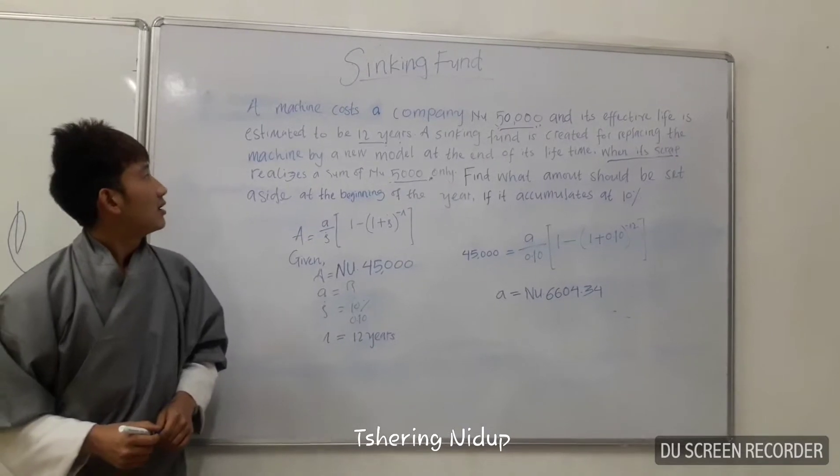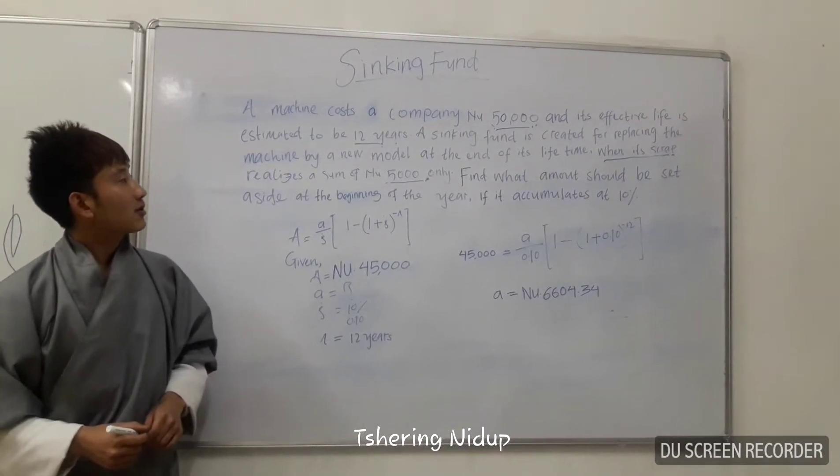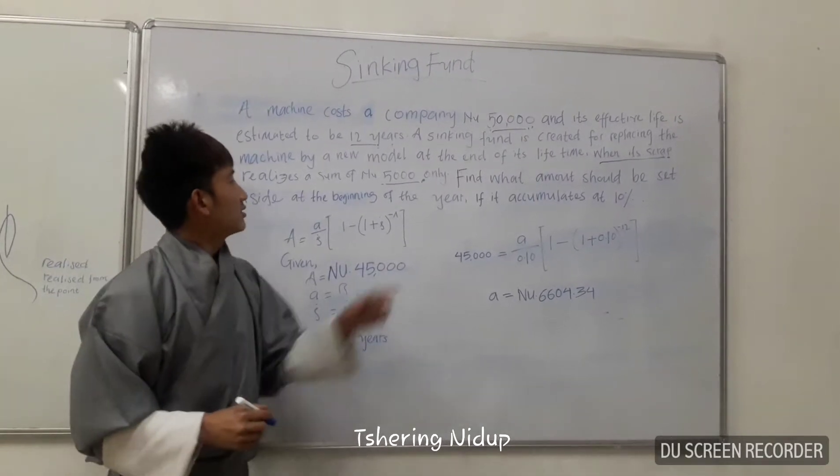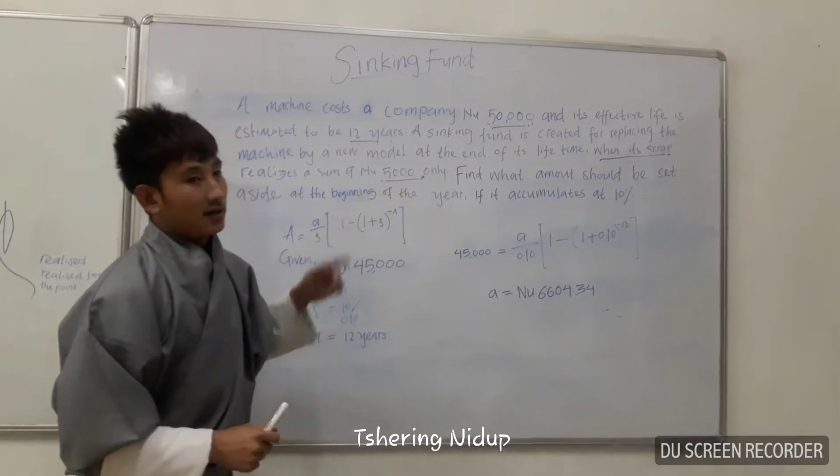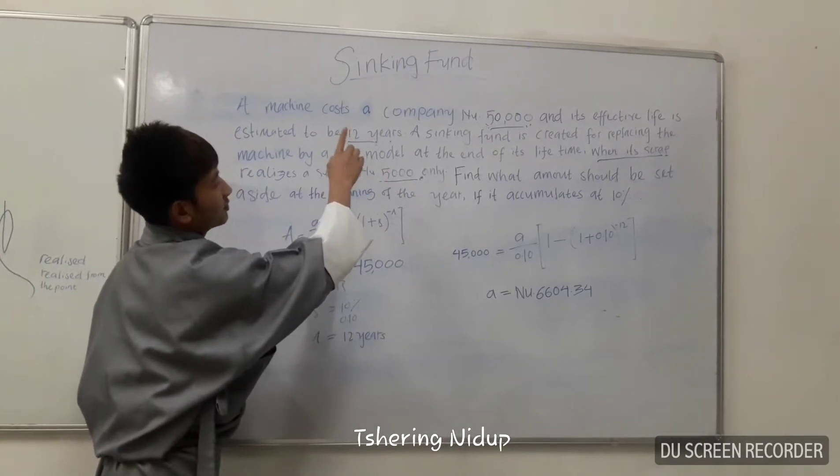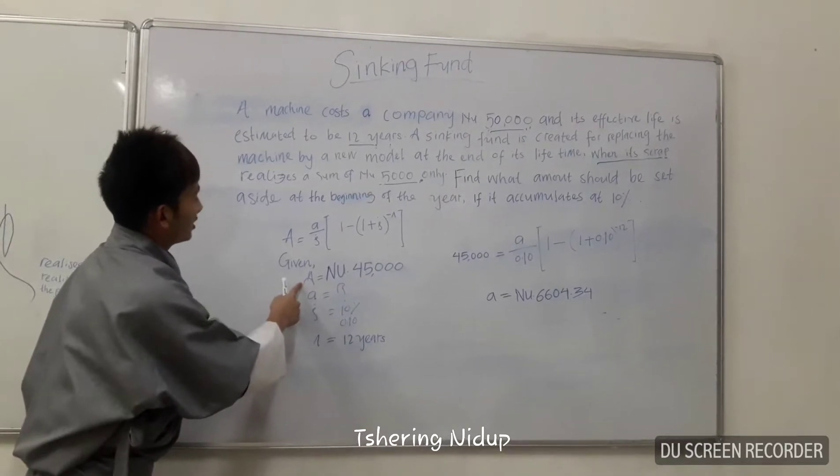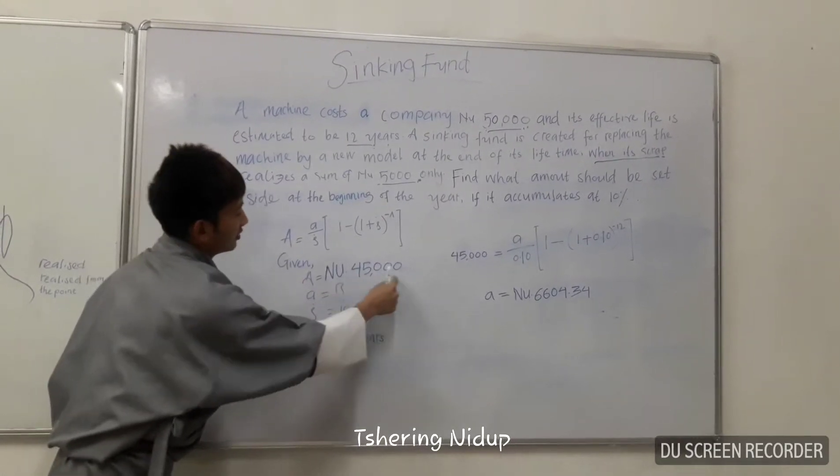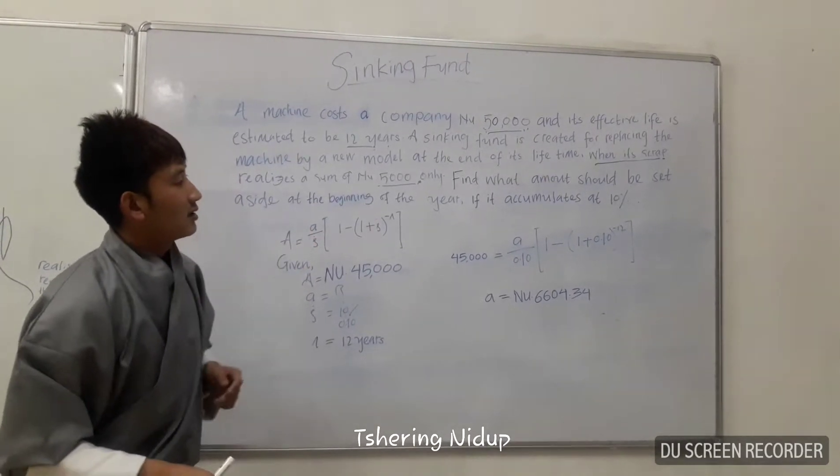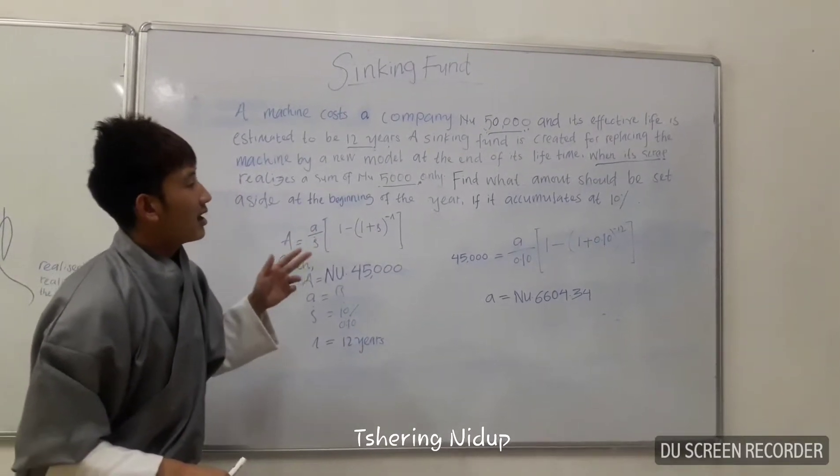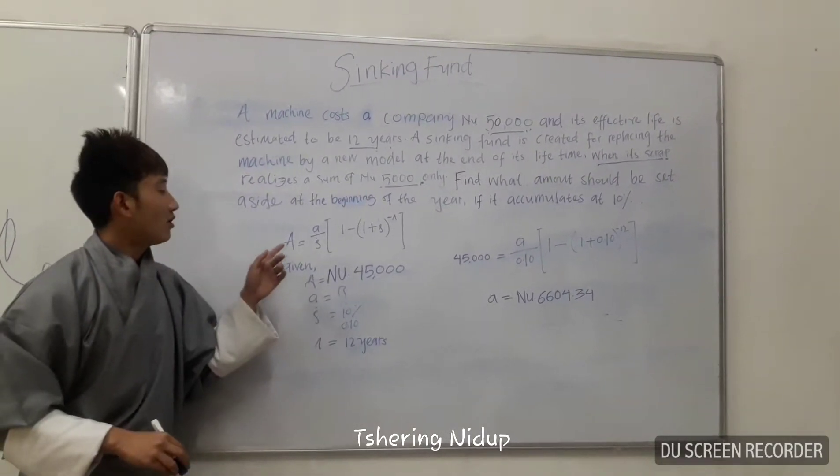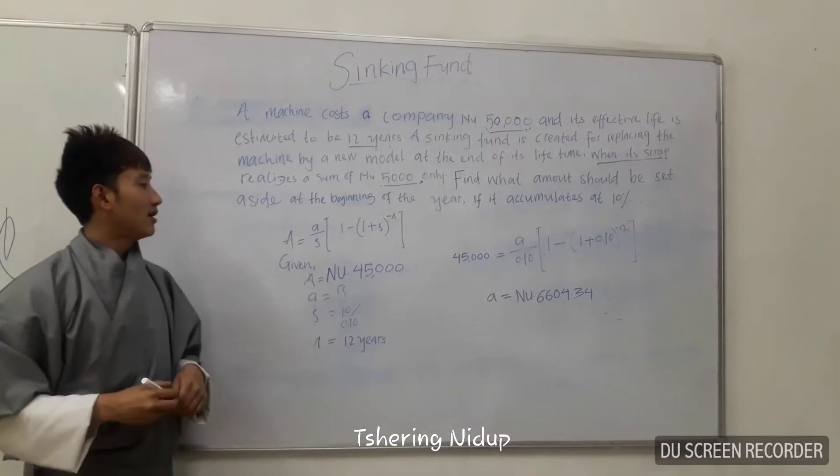In this question, the cost of a machine given is $50,000 and the scrap value given is $5,000. By subtracting the scrap value from the total cost of machine, the actual cost of machine is $45,000. In this sinking fund question, we have to find the installment amount at the beginning of the year, which means we have to apply the annuity due formula.